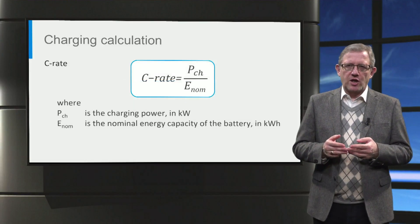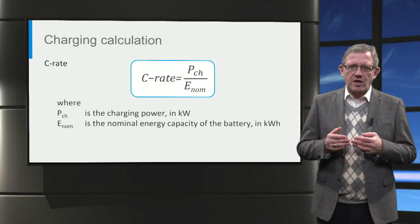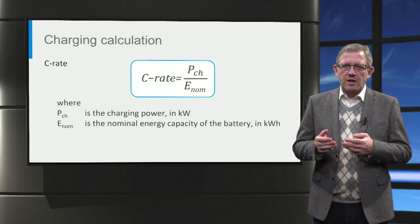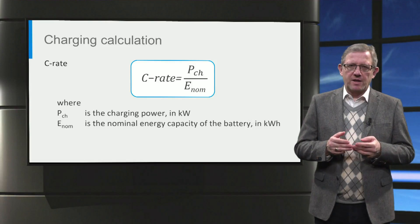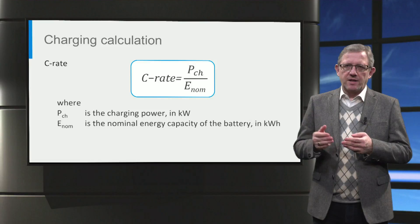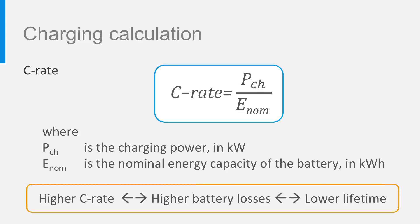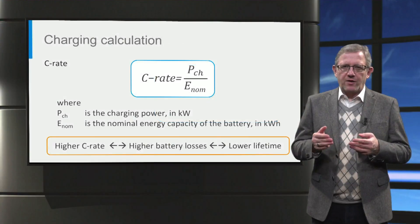The next important parameter is the charge rate, often referred to as C-rate. It is the ratio of the charging power to the nominal energy capacity of the battery. As the charging current increases, so does the C-rate. The importance of C-rate is that as the C-rate increases, battery losses and temperature of the battery increase as well. This eventually reduces the lifetime of the battery. Hence, to ensure the long lifetime of the battery, lower C-rates are preferred.